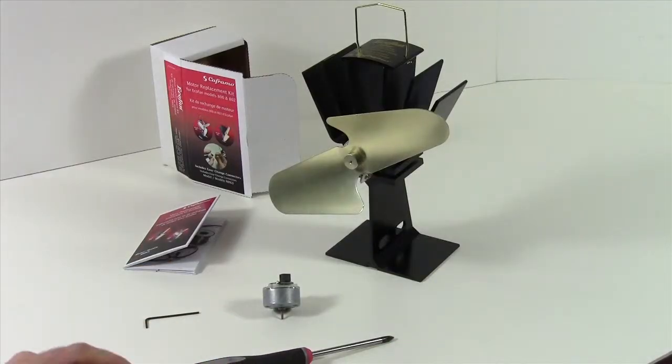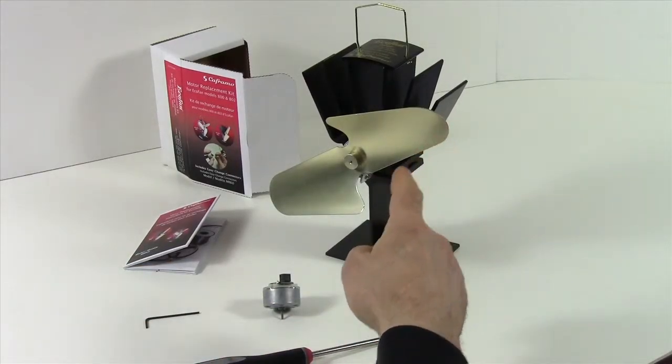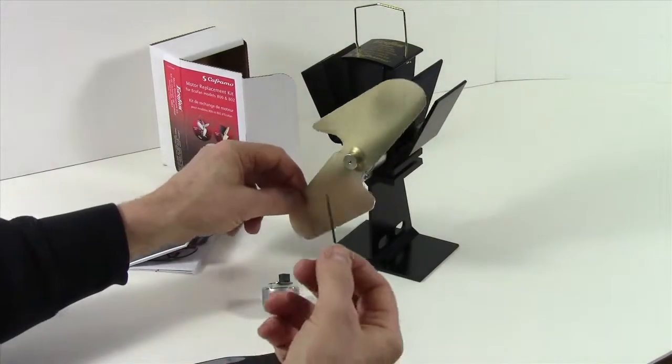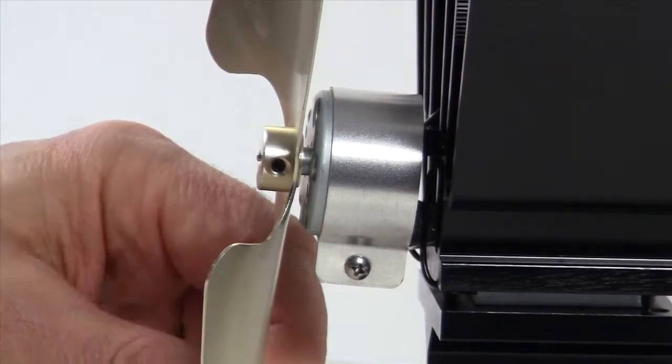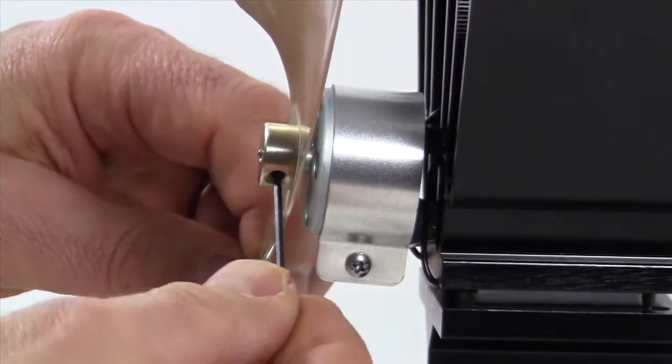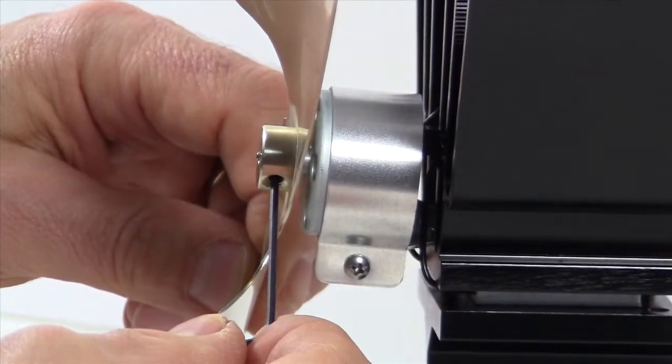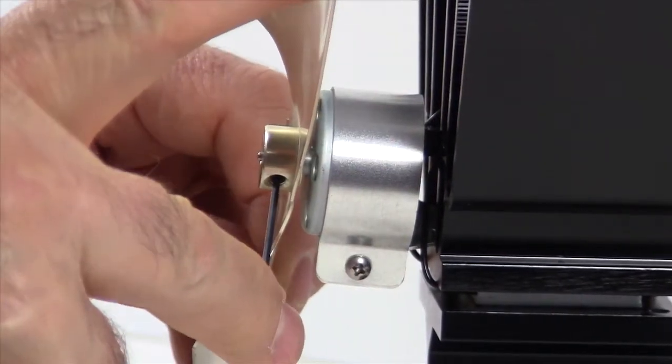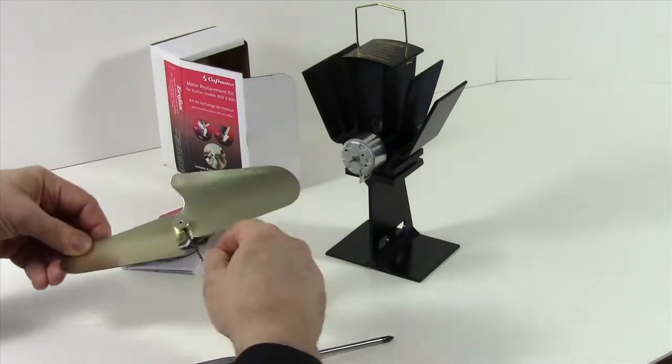Now the first step is going to be to remove the blade from the EcoFan. So we're going to use our allen key, and insert the allen key into this tiny hole here on the blade. We turn the set screw counter-clockwise to loosen it, and now we can simply slide the blade off the shaft.